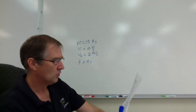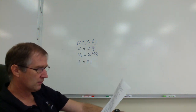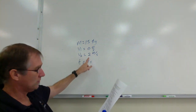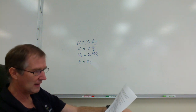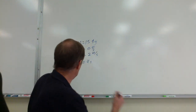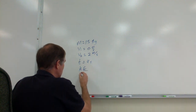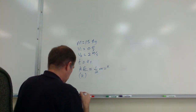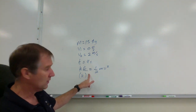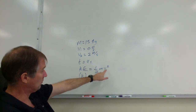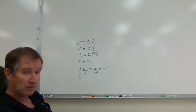Question 37: you push a 15 kilogram box of Christmas ornaments across the floor. The box speeds up from rest to 2 meters per second in 4 seconds. Calculate the change in kinetic energy of the box. Kinetic energy is the energy of motion, and the equation for kinetic energy is KE equals one-half mv squared — kinetic energy in joules is one-half times the mass in kilograms times the speed squared.